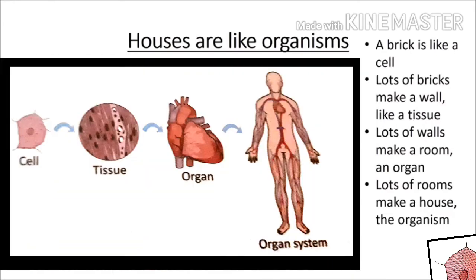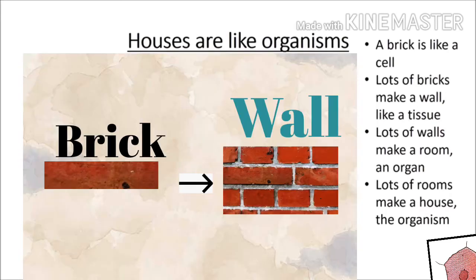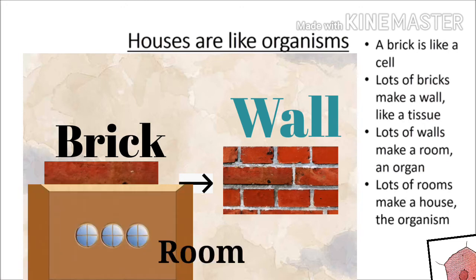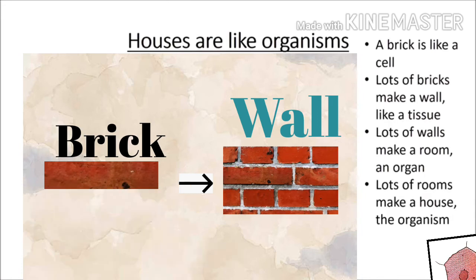Children, look at the picture. Cell makes a tissue. Tissue makes an organ. And organ makes an organ system. Similarly, lots of bricks make a wall, lots of walls make a room, and lots of rooms make a house.